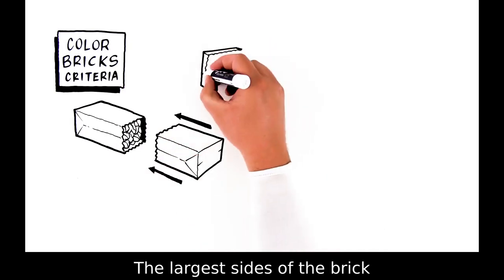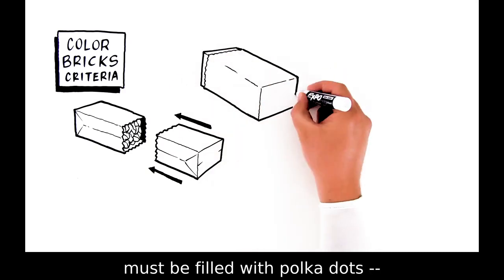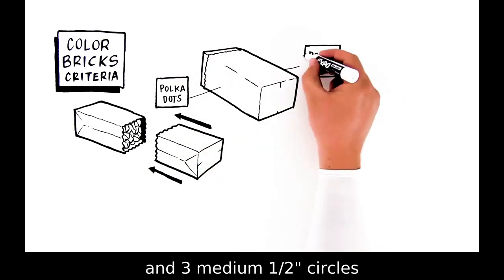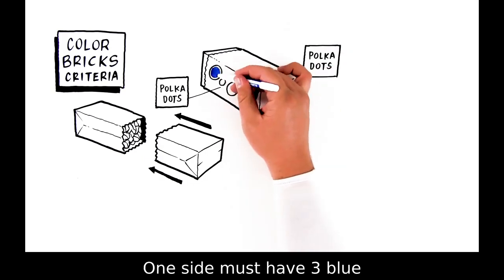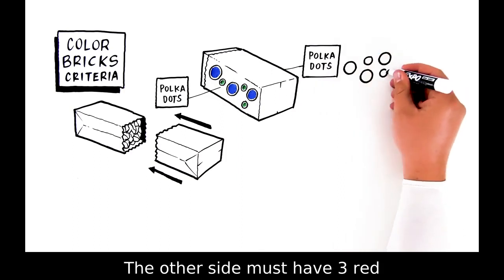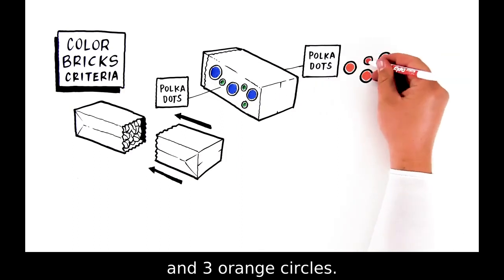The largest sides of the brick must be filled with polka dots. Three large one-inch diameter and three medium half-inch circles scattered per side. One side must have three blue and three green circles. The other side must have three red and three orange circles.